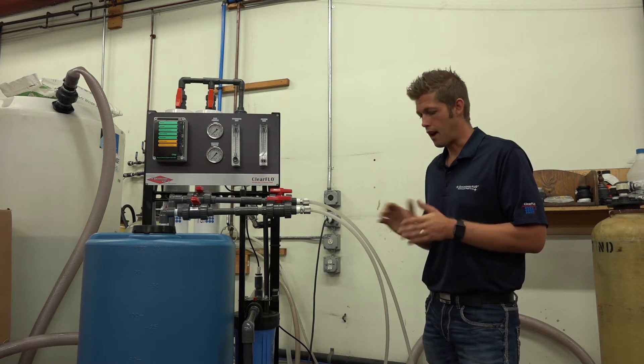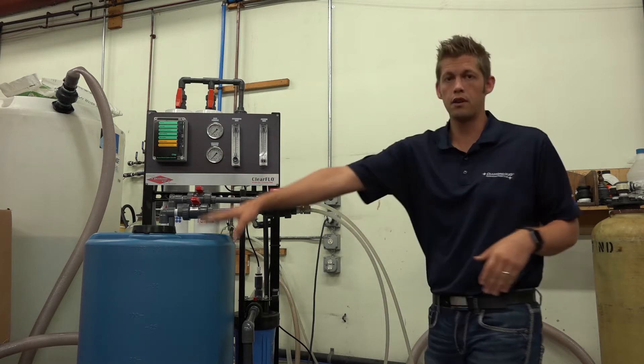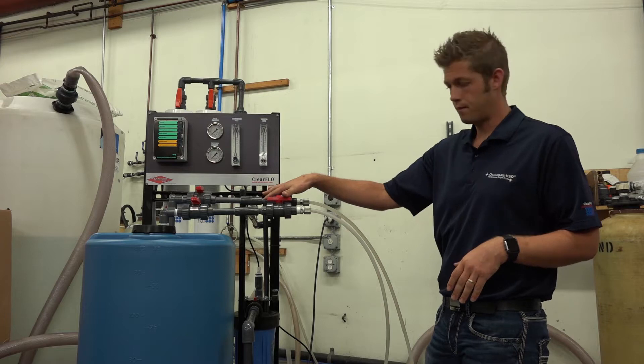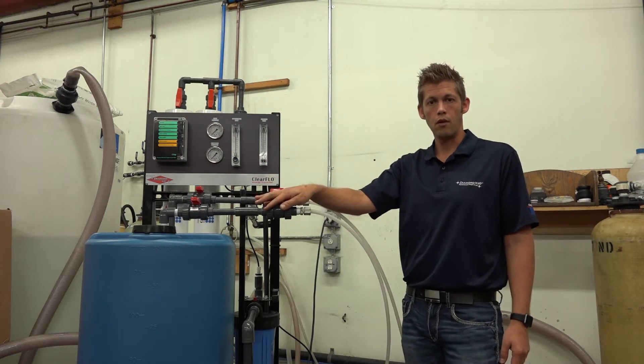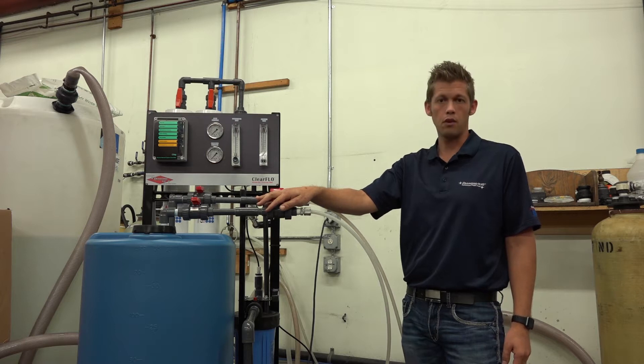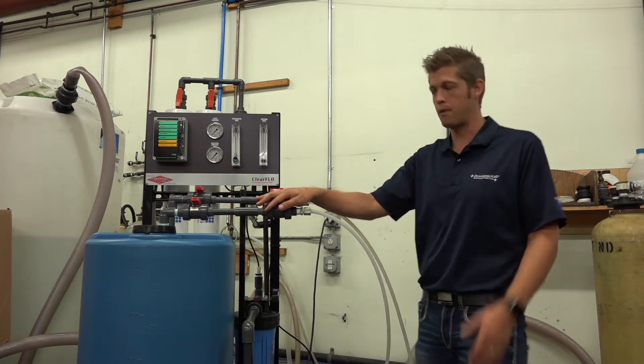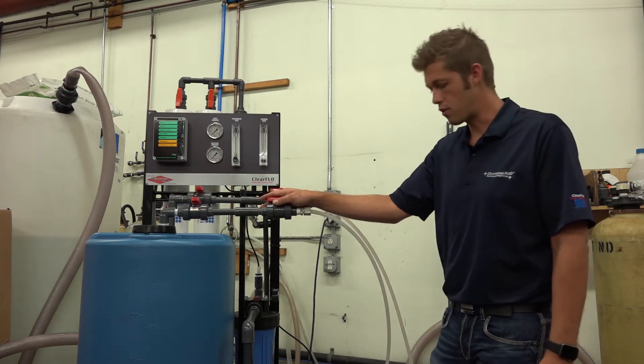To start, you've got valves going both to this holding tank and to the drain. When you're trying to flush the system, you can open up to the drain. Also, when you're going to start to prime it, you can also run into the drain.